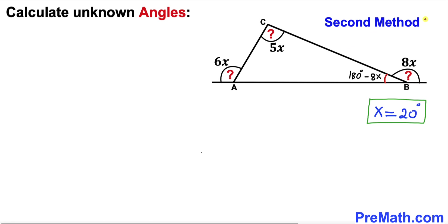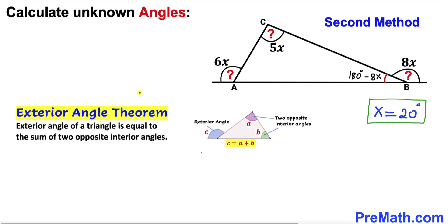And now let me share with you the second method. And now let's recall exterior angle theorem. Exterior angle of a triangle is equal to the sum of two opposite interior angles.